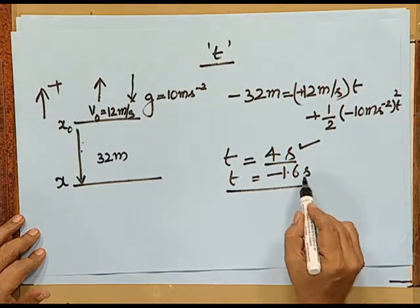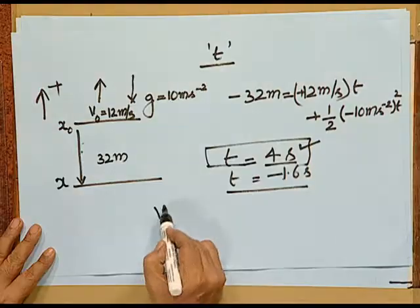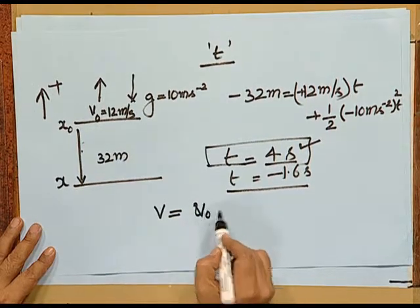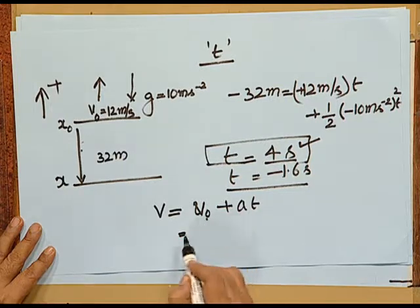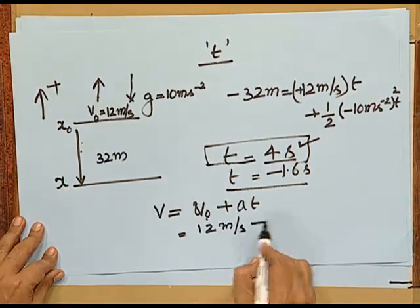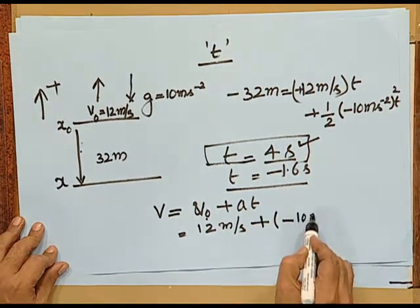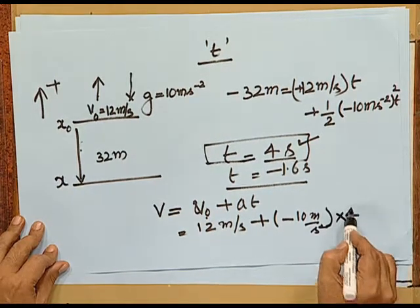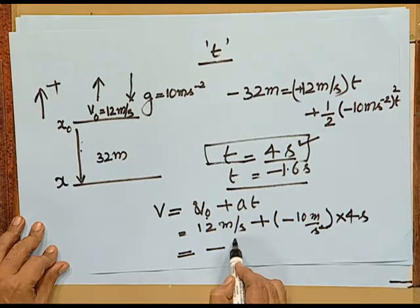The reason for rejecting −1.6 seconds should be made clear. You might say time cannot be negative — but note that t = 0 is what we have chosen as the start. So t = −1.6 seconds could mean 1.6 seconds before the throw, the object was at ground level. Taking t = 4 seconds, we compute the velocity using v = v₀ + at: v₀ = 12 m/s, a = −10 m/s², t = 4 s, giving v = −28 m/s.